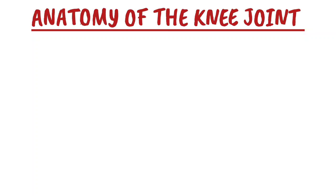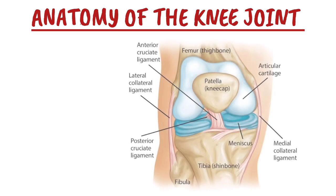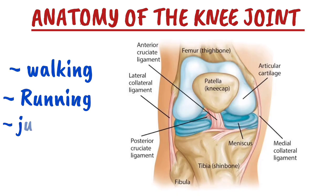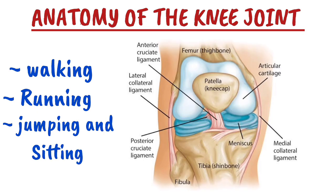Hi everyone, in today's tutorial we are going to talk about the anatomy of the knee joint. The knee joint is one of the most complex and important joints in the body. It plays a crucial role in movement, supporting body weight, and allowing for activities such as walking, running, jumping, and sitting.